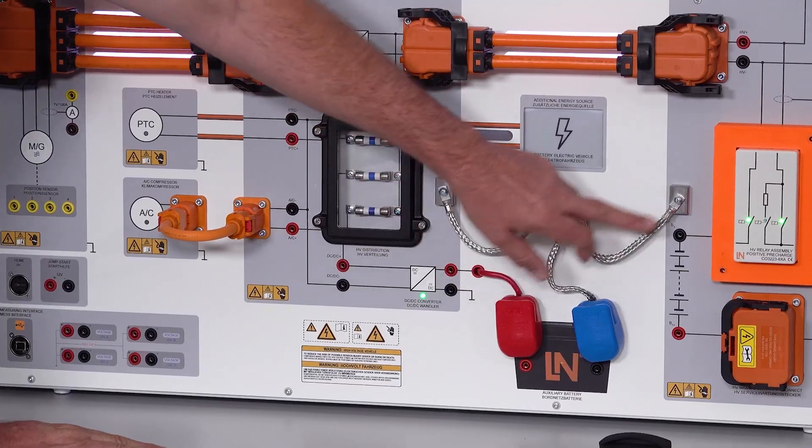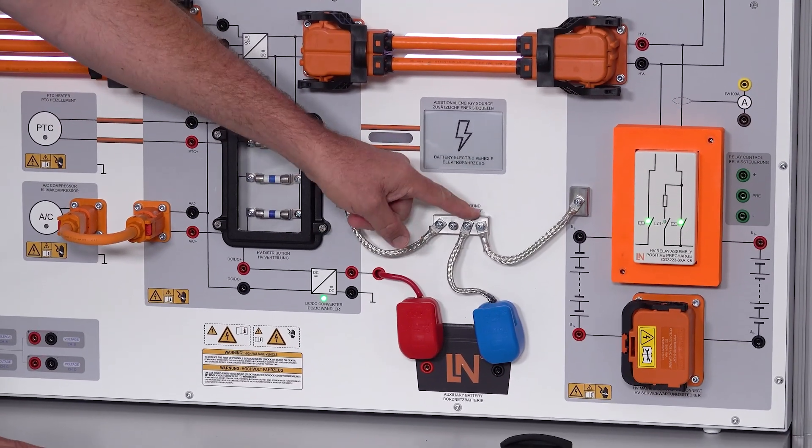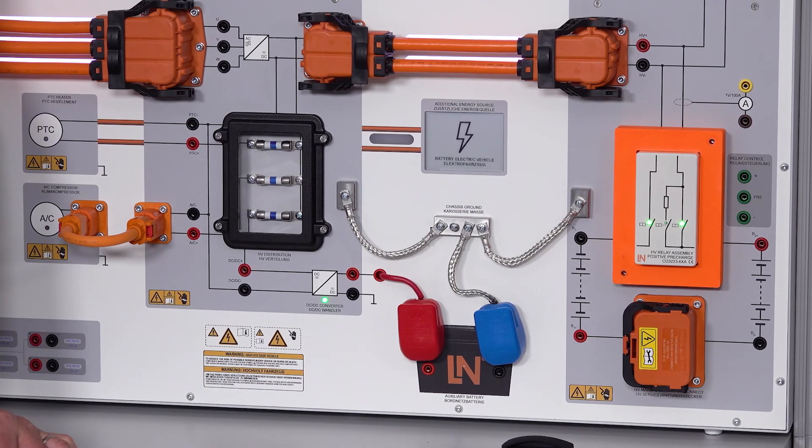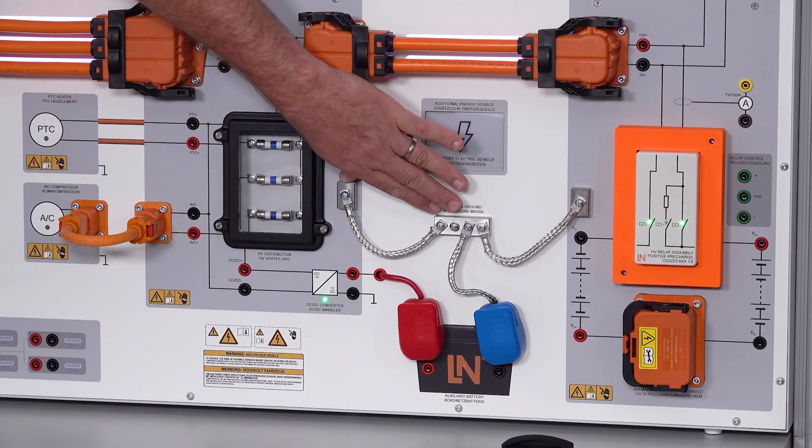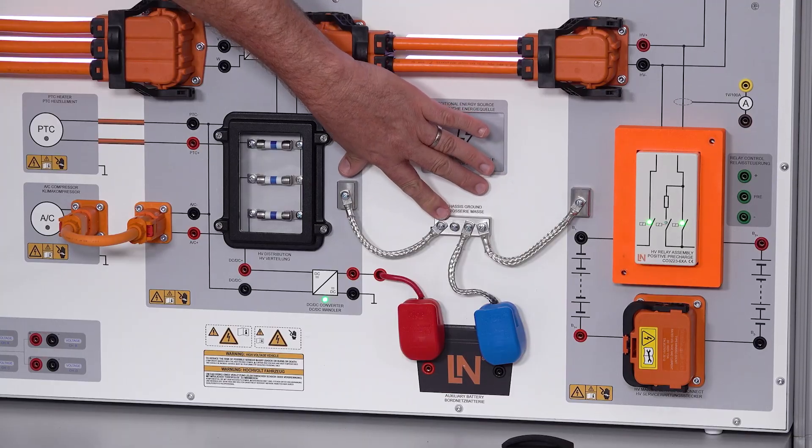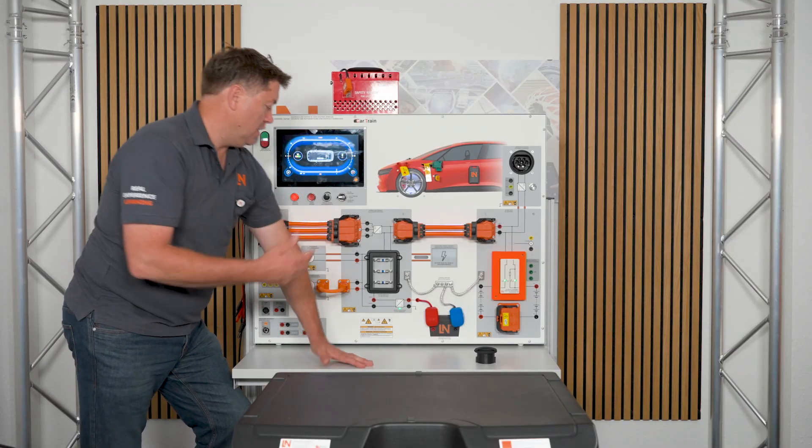And then having a look here, we've also got these cables. This is our potential equalization cables, a very important safety factor within EVs, where we're actually equalizing any potential energy. In this case, this would be, for example, if you have a fault, internal fault within the inverter.